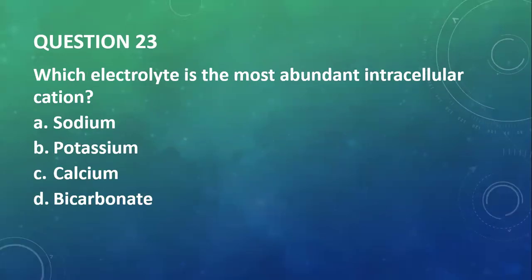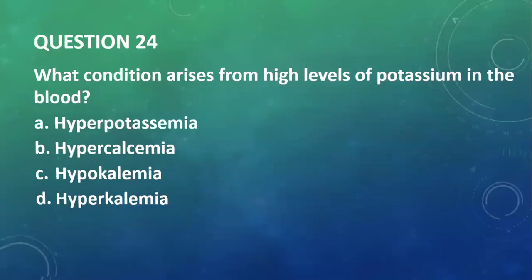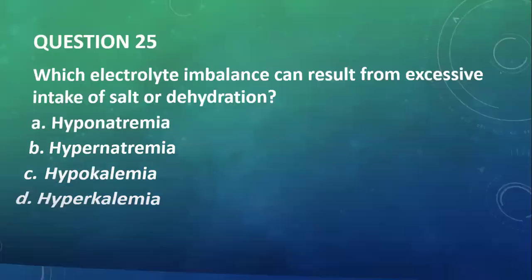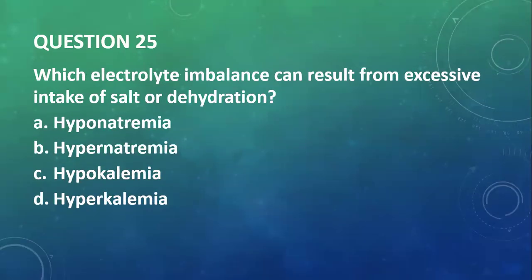Question 23: Which electrolyte is the most abundant intracellular cation, not extracellular? We go with potassium. Question 24: What condition arises from high levels of potassium in the blood? You have hypopotassemia—that's low, hypercalcemia, hypokalemia, and hyperkalemia. We go with hyperkalemia because that's the name for high levels of potassium above the upper limit of normal in the blood.